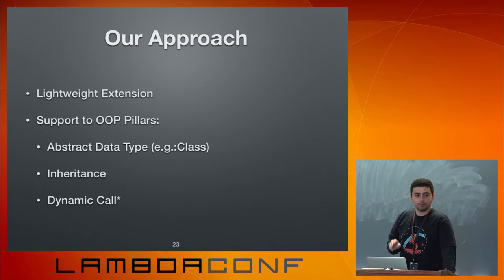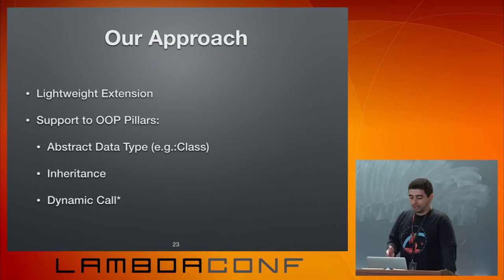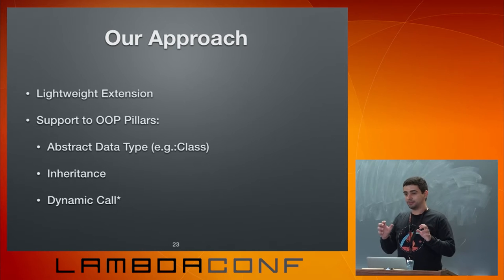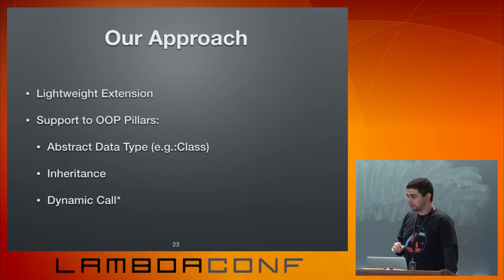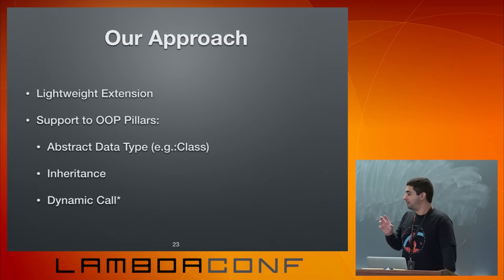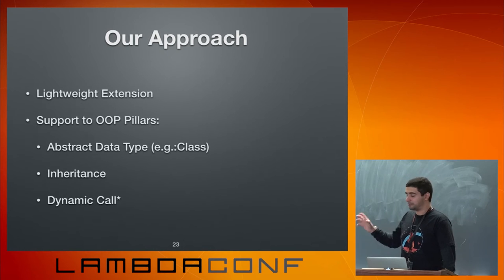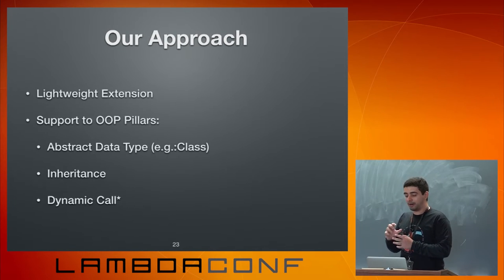To do that, we have to support three pillars that any OOP language must support. First, abstract data types — that's just classes: a bunch of data and methods that operate together. Second, inheritance — you can declare a class and define a more specialized one that provides new features and enables code reuse from the parent. Third, dynamic dispatch — in a statically typed language, when you call a function on a parent type but pass a specialized subtype, it must resolve to the specialized implementation at runtime.